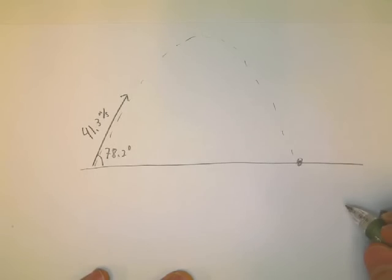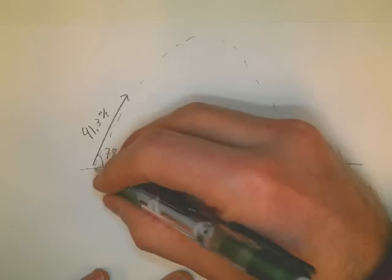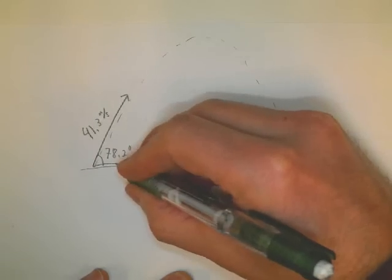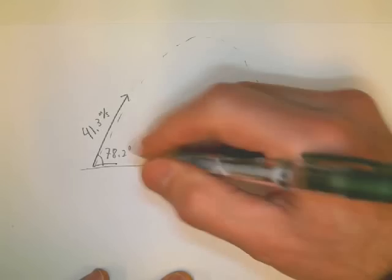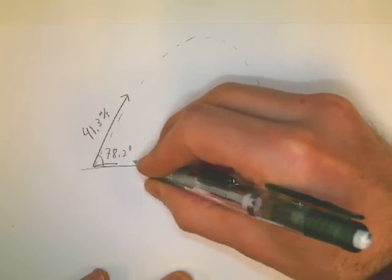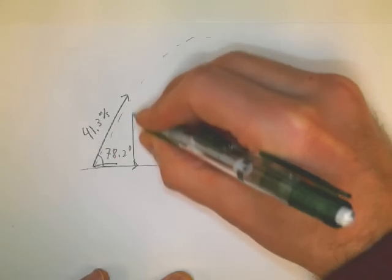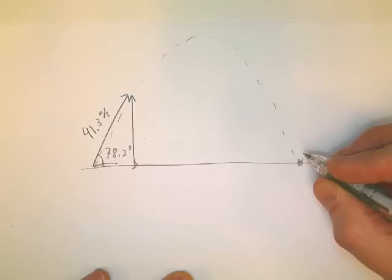The very first thing we have to do is figure out this in vector components. We've got to know the horizontal component, which isn't much, and the vertical component, which is quite a lot. This is a trig angle, so this is easy.